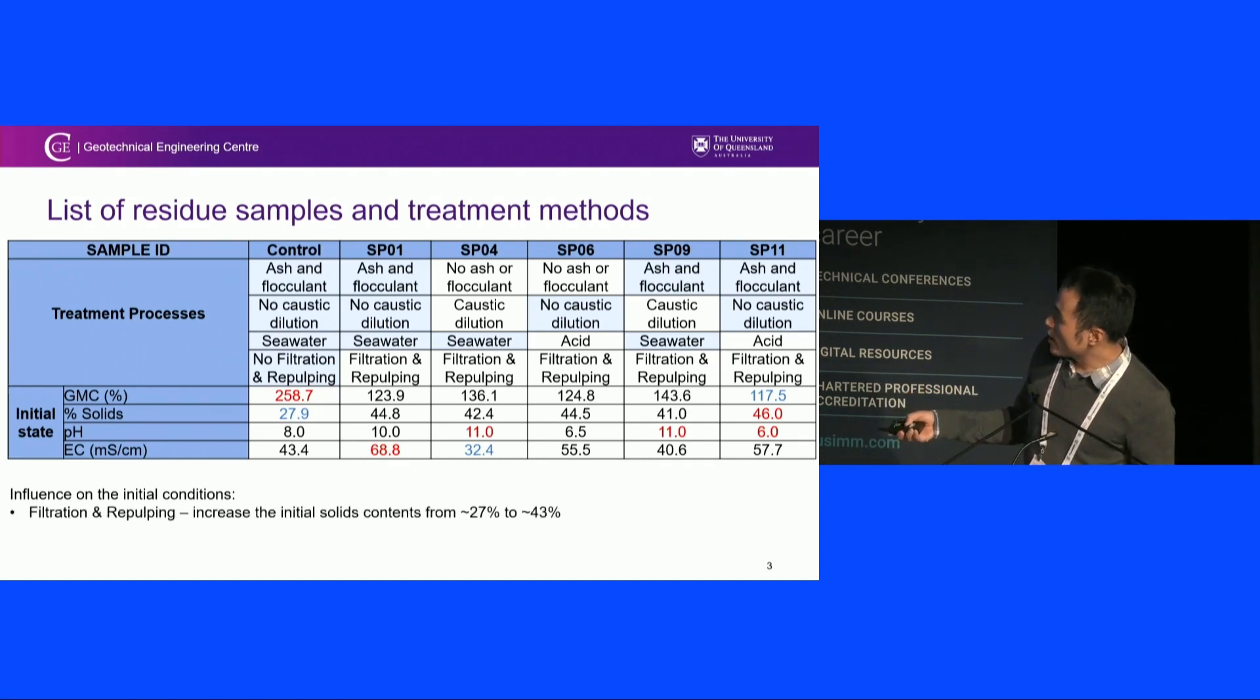One of the clear things is that the control sample has been subjected to no filtration and repalping, whereas the rest of them has. If you have conducted the filtration and repalping, you see the percentage of solids increased from 25-27% by mass to around 40%, and the gravimetric water content definitely reduced as a result.